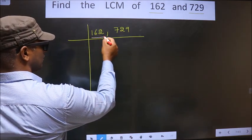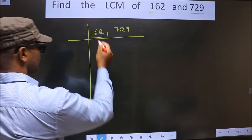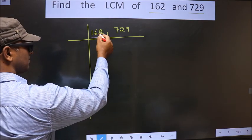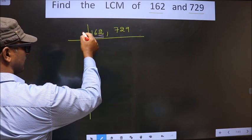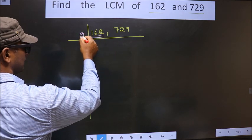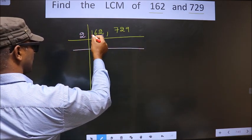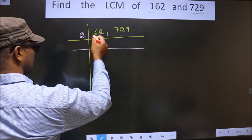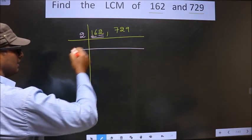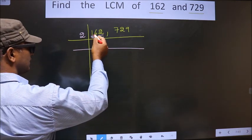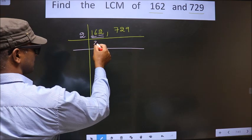First, we focus on the first number. For this number, the last digit is 2, which is even, so we take 2 here. The first number is 1; since 1 is smaller than 2, we take 2 digits, that is 16. When do we get 16 in the 2 table? 2 eights are 16.